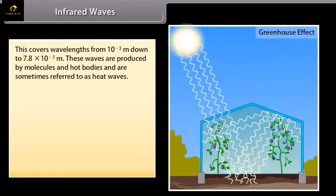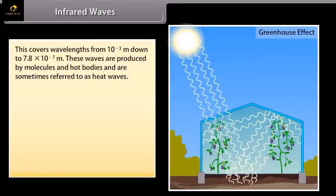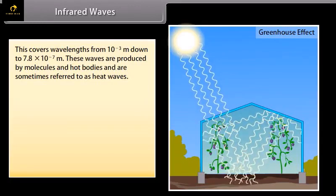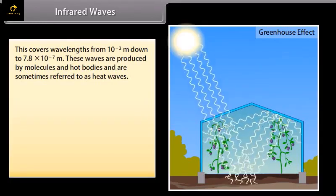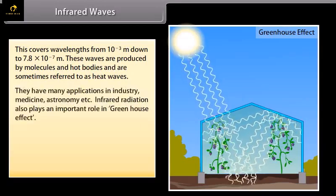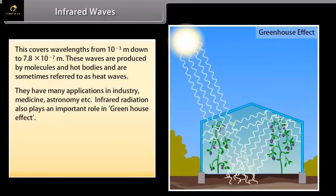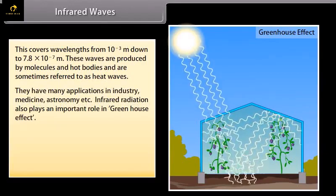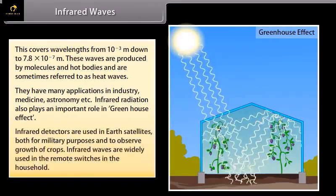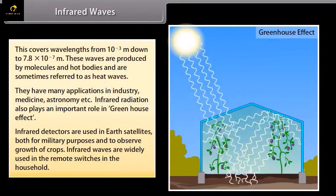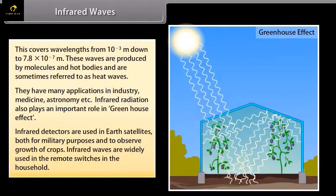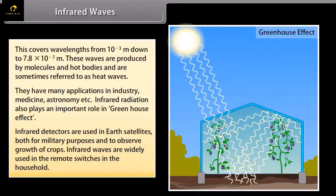Infrared waves. This covers wavelengths from 10 raised to the power minus 3 meter down to 7.8 into 10 raised to the power minus 7 meter. These waves are produced by molecules and hot bodies and are sometimes referred to as heat waves. They have many applications in industry, medicine, astronomy, etc. Infrared radiation also plays an important role in greenhouse effect. Infrared detectors are used in Earth satellites both for military purposes and to observe growth of crops. Infrared waves are widely used in the remote switches in the household.